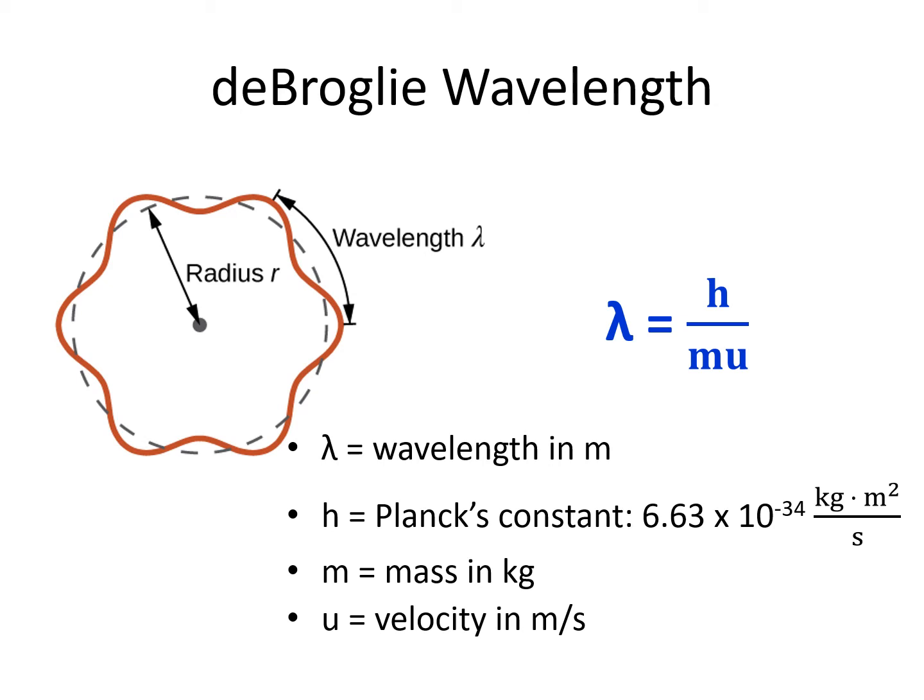As we use this equation, we need to make sure we have the correct units. Wavelength must be in meters. I have given you Planck's constant in joules times seconds earlier in this chapter, but we are here going to use the units kilograms meters squared over seconds. These are equivalent units to joules times seconds, but will allow us to cancel out the other units in our problem. The mass in this problem must be in kilograms, not grams. The velocity is in meters per second.